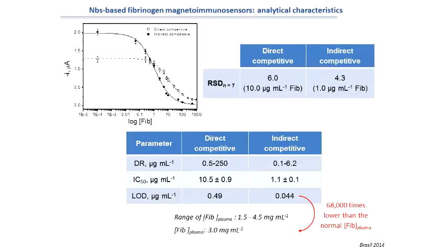These are the calibration curves and analytical characteristics for both competitive immunoassays. Although both configurations are useful for fibrinogen determination at clinically relevant concentrations, the indirect competitive immunoassay showed much higher sensitivity — with a limit of detection 68,000 times lower than the normal fibrinogen concentration in plasma, allowing considerable sample dilution to remove potential matrix effects.